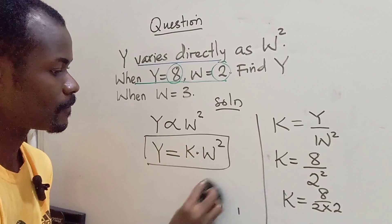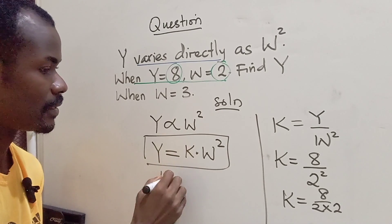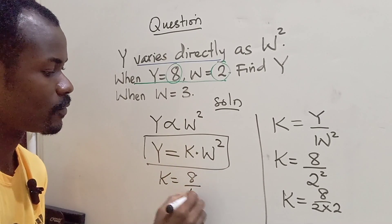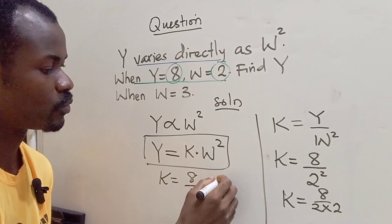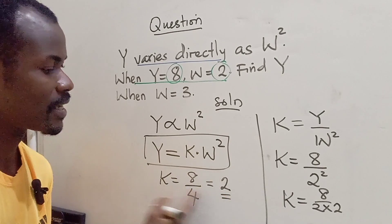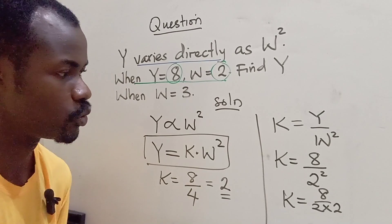So 2 times 2 is 4. So I'm simply going to say my K equals 8 divided by 4. So 8 divided by 4 is 2. So our value of K is 2.